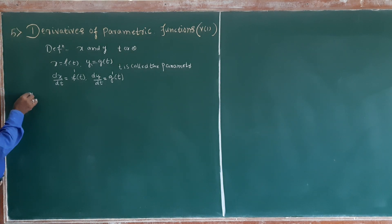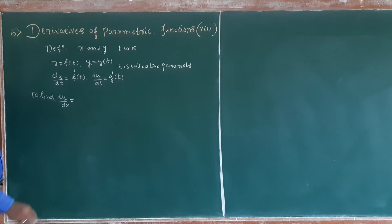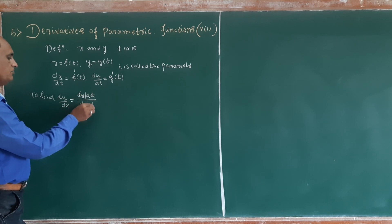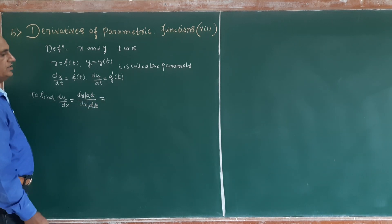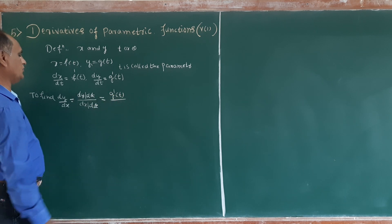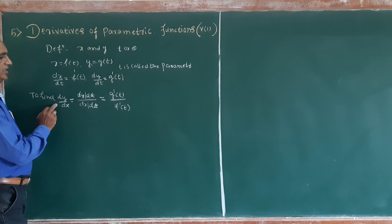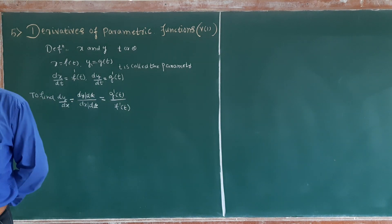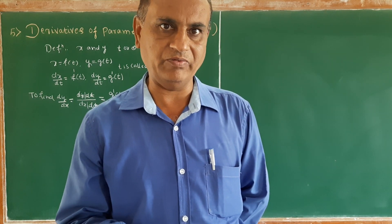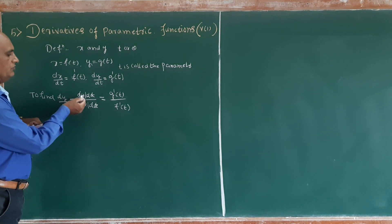Then, to find dy/dx, you have to use the relation: dy/dx is equal to dy/dt divided by dx/dt. If theta is the parameter, differentiate with respect to theta. Then dy/dx is equal to dy/d(theta) divided by dx/d(theta).